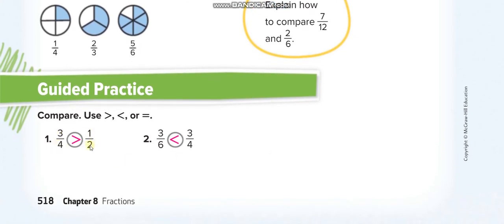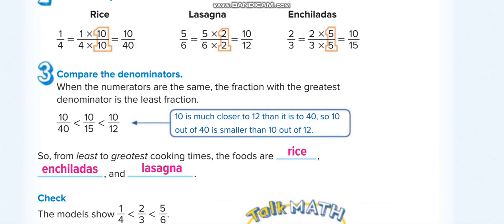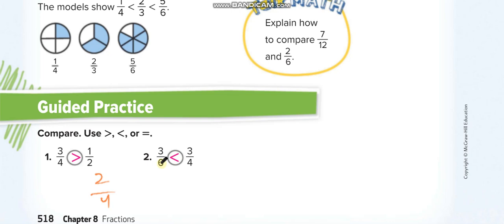Now look at 3 over 4 and 1 over 2. If we multiply 1 over 2 by 2 over 2, we get 2 over 4. So 3 over 4 is greater than 2 over 4. In the next example, the numerators are already the same, so we just check: the greatest denominator is the least fraction. 6 is the greatest denominator, so that fraction is the least, and 3 over 4 is the greatest.